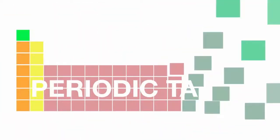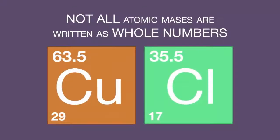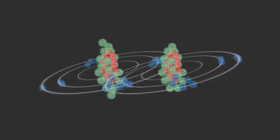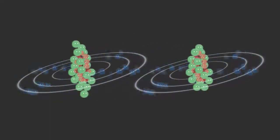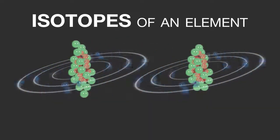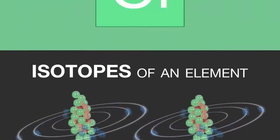As you look through the periodic table, you may have noticed that not all atomic masses are written as whole numbers. Elements can exist with slightly different numbers of neutrons. We call these isotopes of an element. It is particularly common for heavier elements, but a familiar lighter example is chlorine.